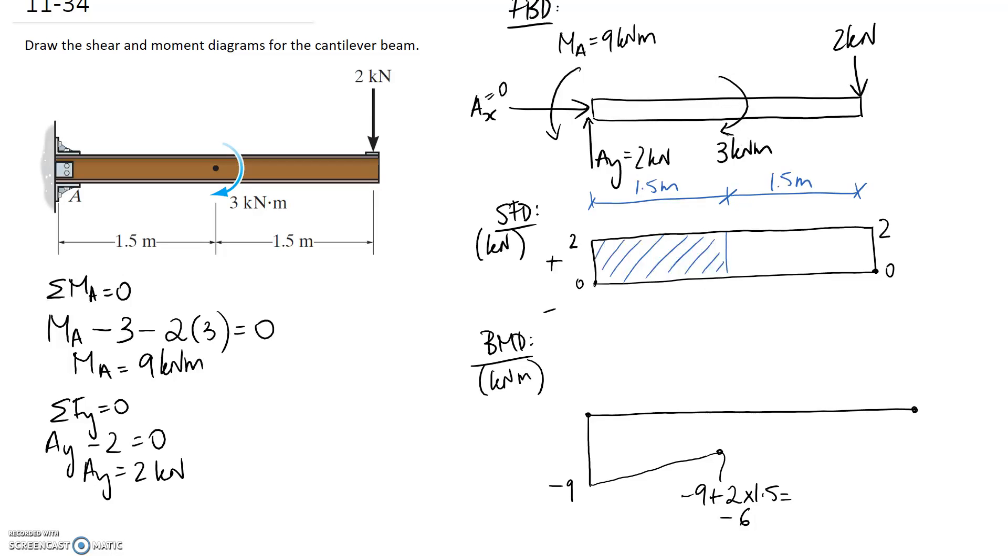So we then have the couple applied at this point and this one is drawn in the clockwise direction, which means when we plot it on the bending moment diagram it needs to be positive. So this is going to drag us up and it's going to be 3 kilonewton meters and it goes upwards. So negative 6 plus 3 is equal to negative 3. So that's where that point lies.